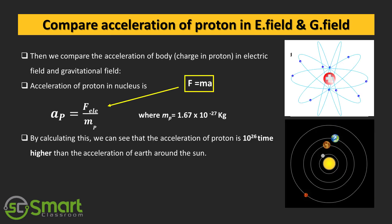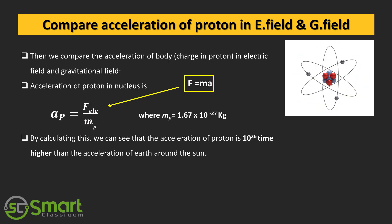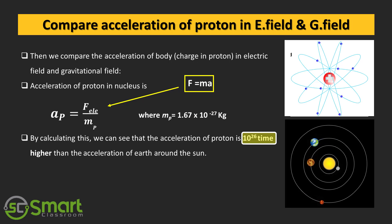Now we will compare the acceleration of proton in electric field and gravitational field. The acceleration of proton in the nucleus is a equals F divided by m. From where we will get this relation? We already studied in the plus one syllabus, Newton's laws of motion. F equals ma. From that we get acceleration equals F divided by m. Here F is the electric force and m is the mass of the proton, 1.67 into 10 to the power minus 27 kilogram. By calculating this we can see that the acceleration of proton is 10 to the power 26 times higher than the acceleration of earth around the sun.